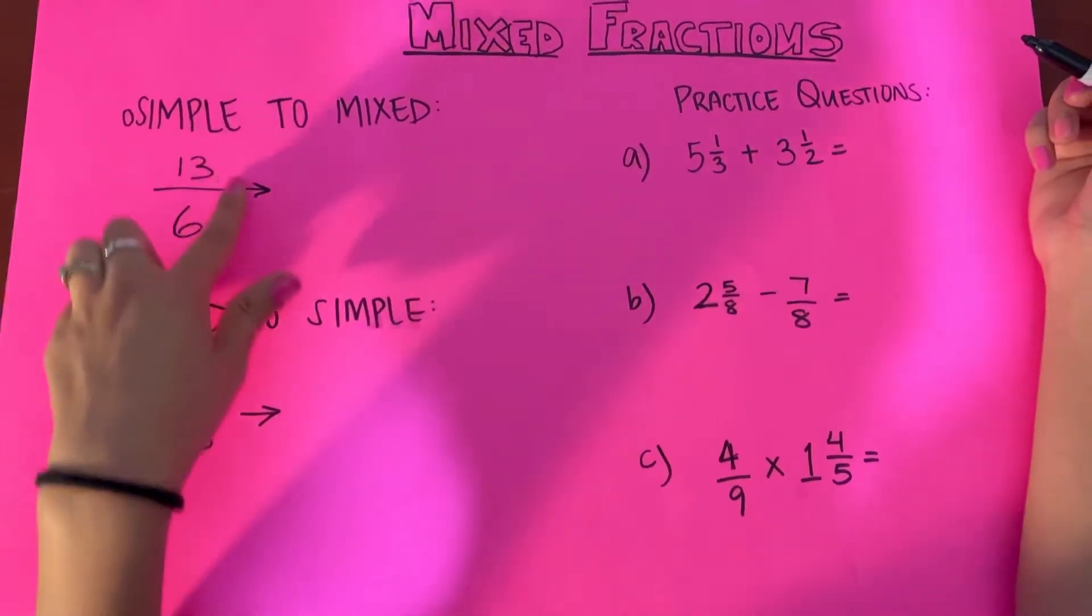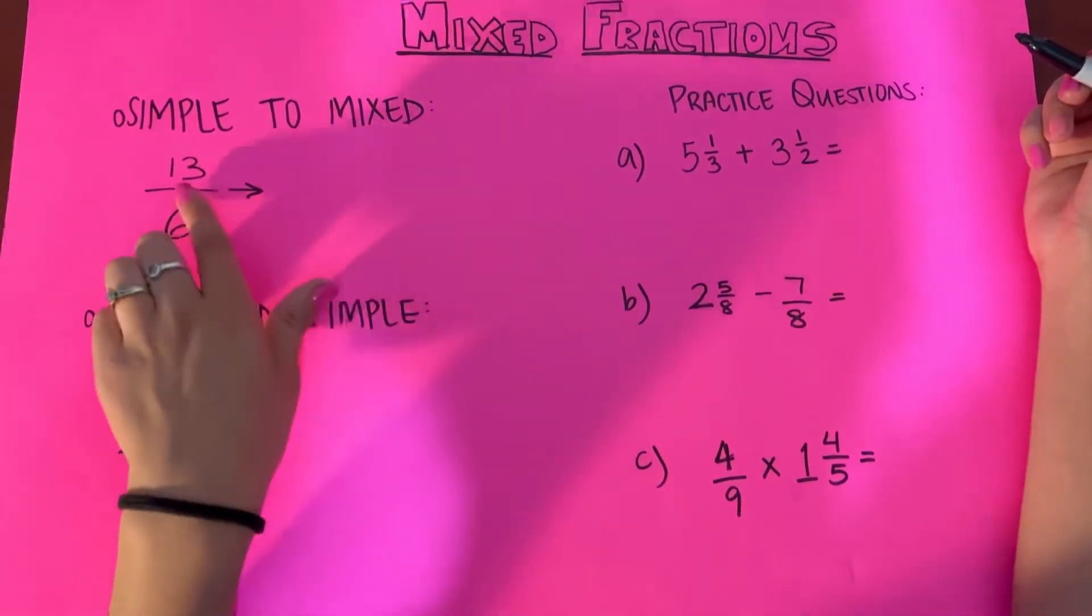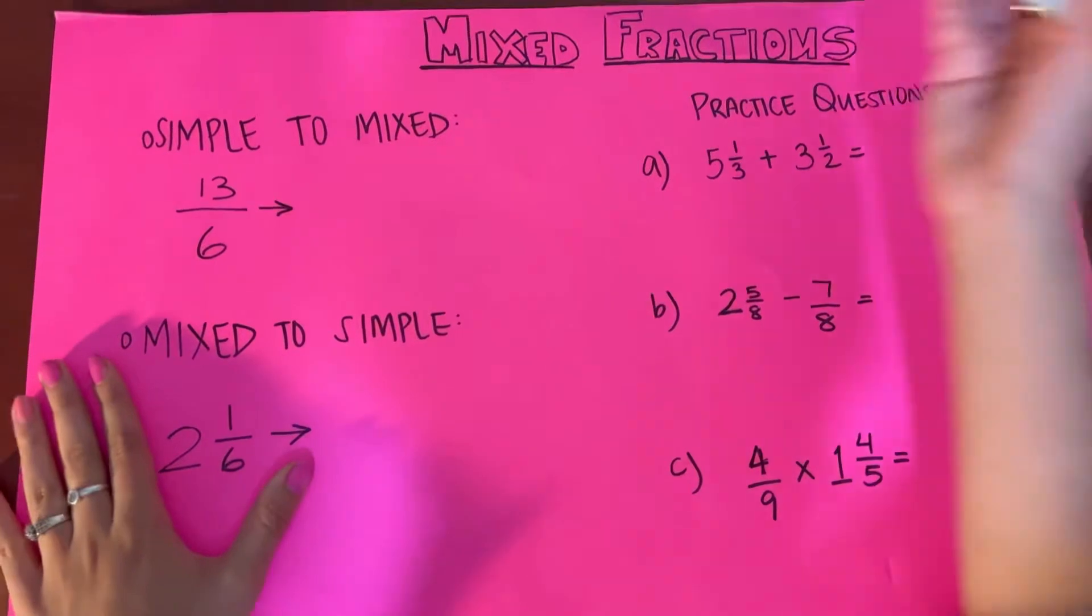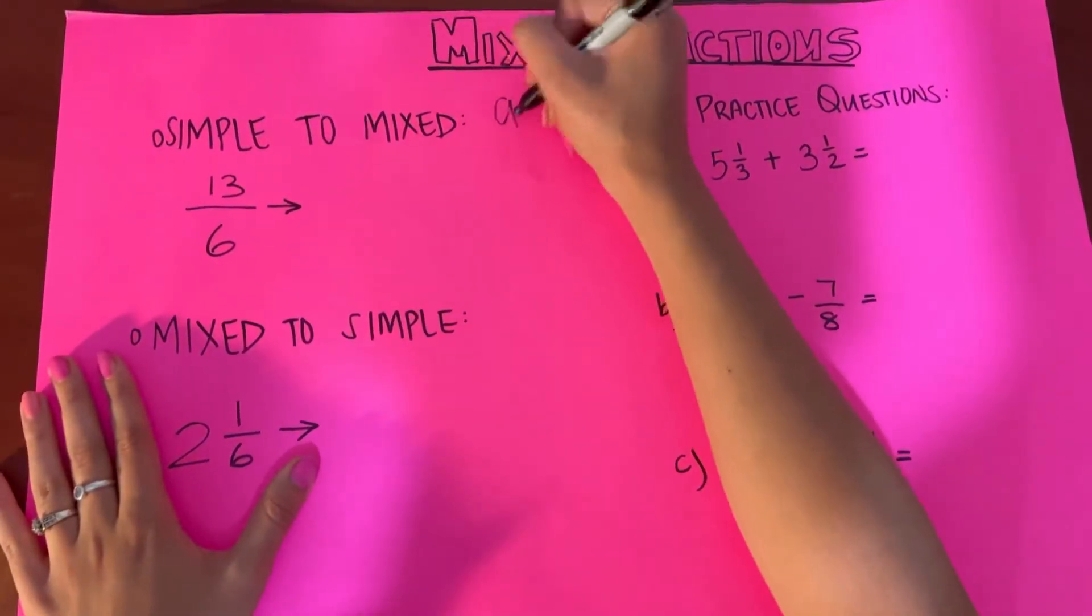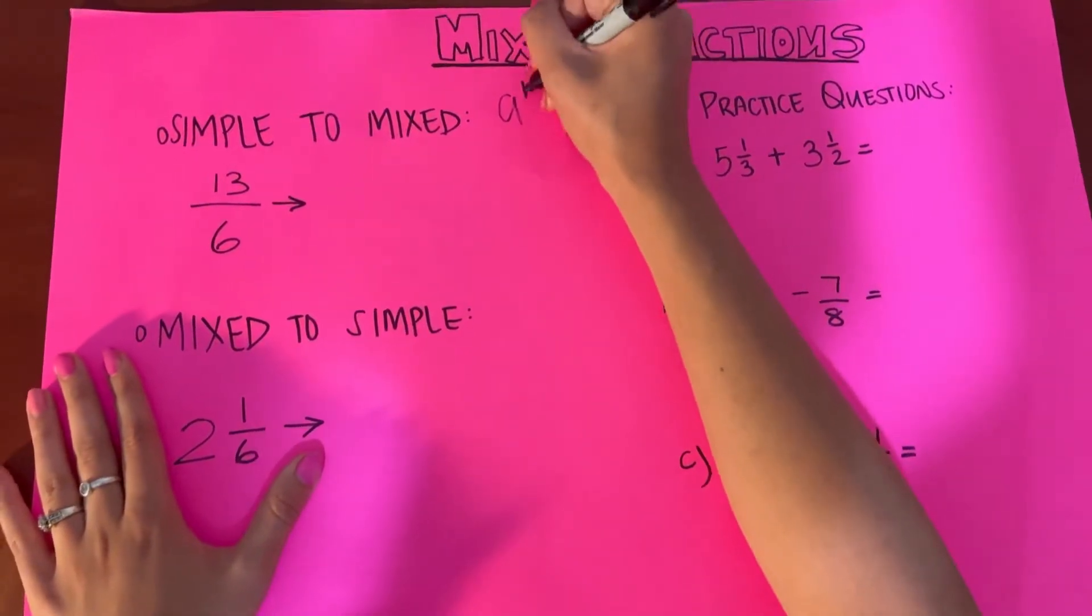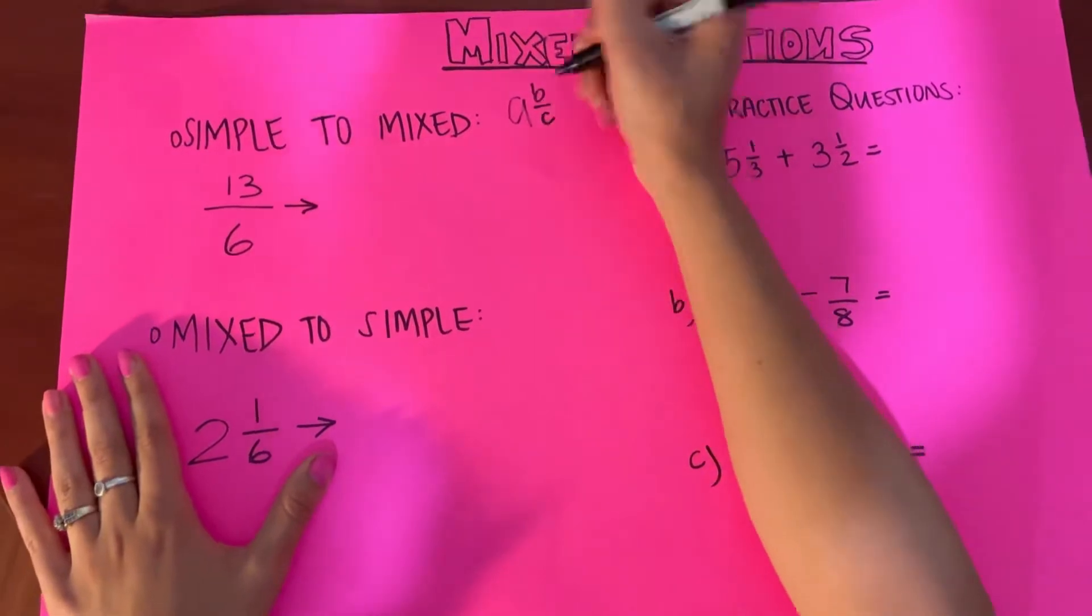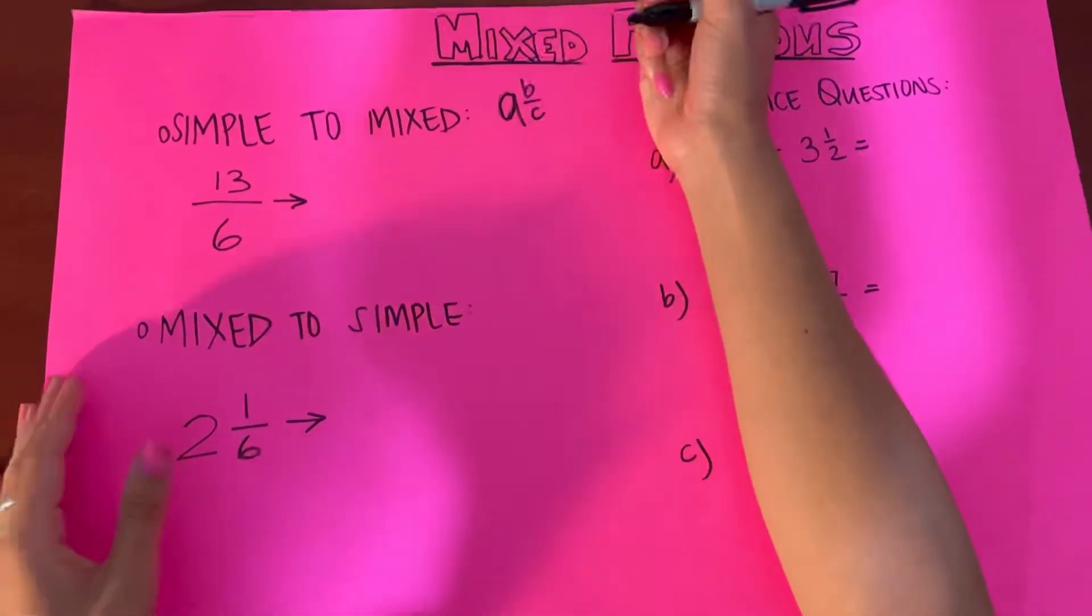So here we have a simple fraction. To convert it to a mixed fraction, a mixed fraction basically looks like A, B over C.